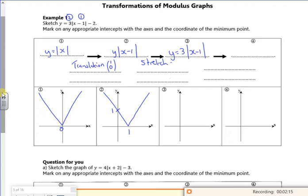Scale factor 3 parallel to the y-axis. So that changes the 1, doesn't it? So the 1 on the x-axis stays the same.